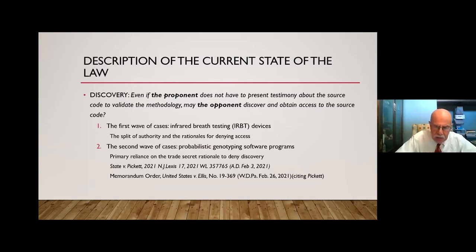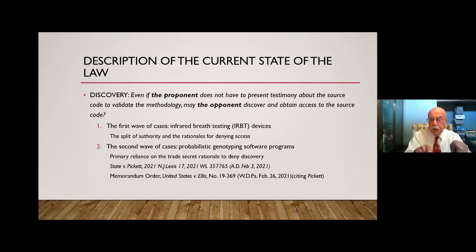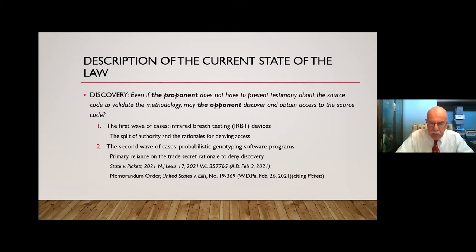Shifting to the second wave — probabilistic genotyping software cases — most courts have again denied discovery. At last count, I think 20 different courts have denied requests by the defense for discovery, with the primary rationale being trade secret. But there is a split of authority, and the most recent cases allow discovery: Pickett decided in early February, and even more recently, a memorandum order by Judge Donetta Ambrose in the Ellis case, which specifically cites Pickett as precedent for allowing source code discovery.